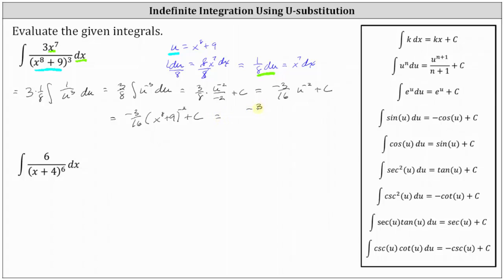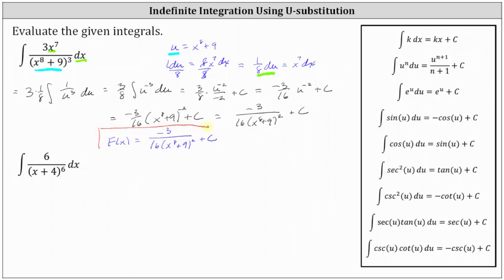Let's also write this using a positive exponent. This is equal to negative three divided by the product of 16 and the square of x to the eighth plus nine, plus c. We often write the result of an indefinite integral using big F of x. So big F of x is equal to negative three divided by the product of 16 and the square of the quantity x to the eighth plus nine, plus c. This is the family of functions whose derivative is equal to the given integrand function.